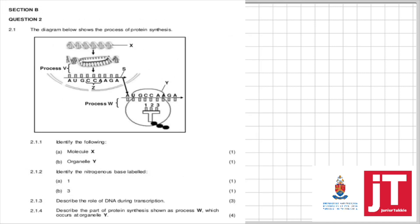The diagram below shows the process of protein synthesis. What is molecule X? Looking carefully at the shape, it is DNA. Organelle Y — I know it's a ribosome. What is the nitrogenous base numbered 1? If this is the tRNA, opposite C will be G — so it's guanine. Identify nitrogenous base label 3 — opposite A will be uracil. Describe the role of DNA during transcription — you've already got that answer. Describe the part of protein synthesis shown at W, which occurs at organelle Y — that's translation. You memorize translation and write it down.